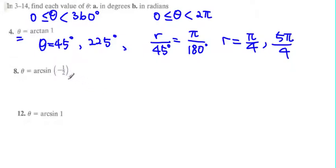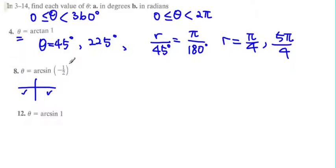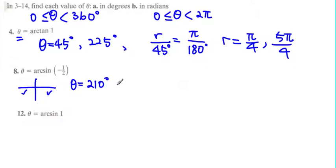The second question is arcsin of negative 1 half. Since sine is negative 1 half, we are looking at the third and fourth quadrants. Since the value is 1 half, the reference angle is 30 degrees. With 30 degrees in the third and fourth quadrant, theta equals 210 degrees in the third quadrant and 330 degrees in the fourth quadrant.